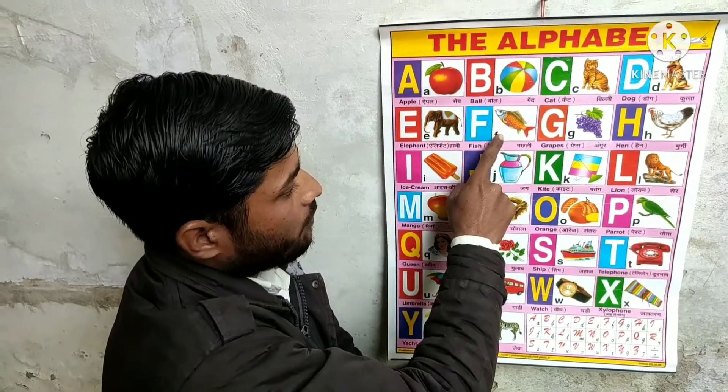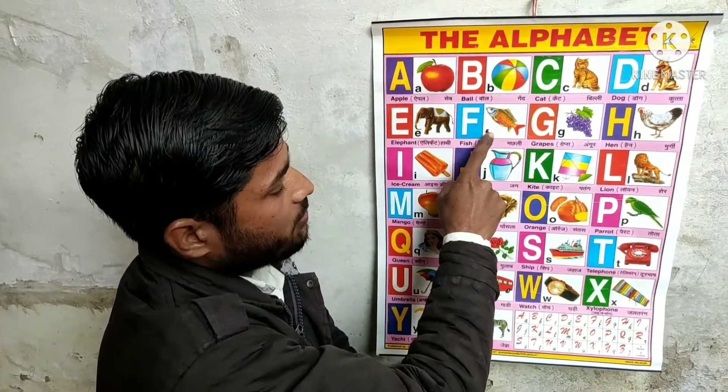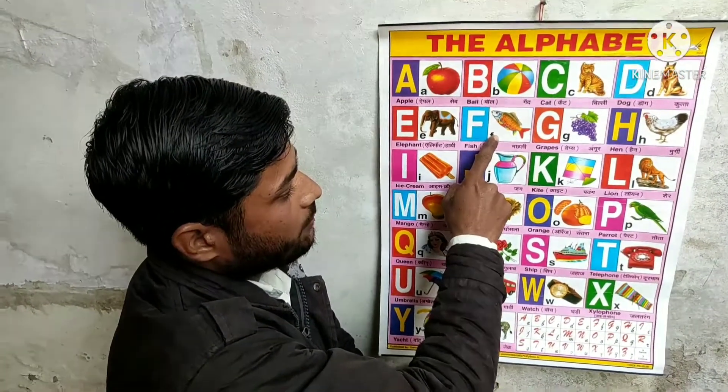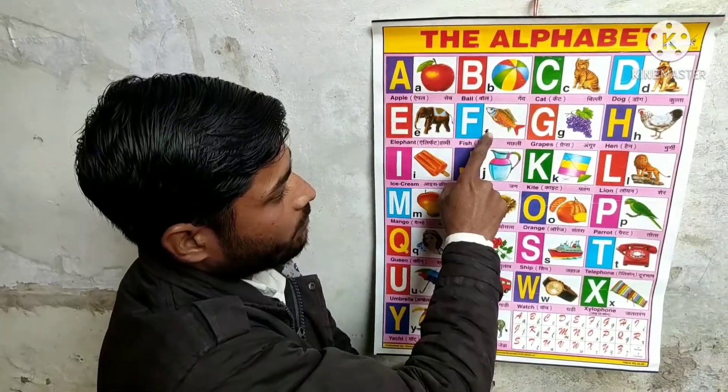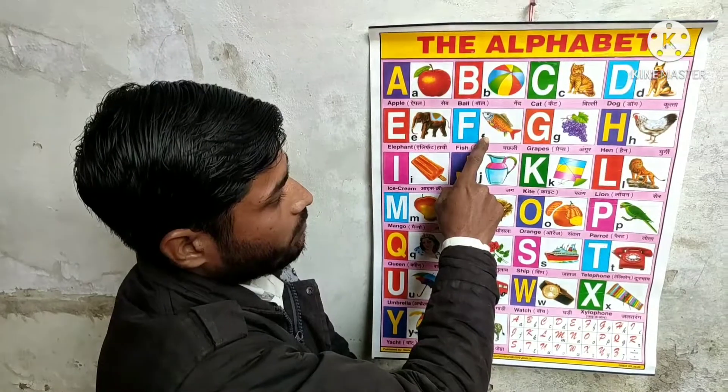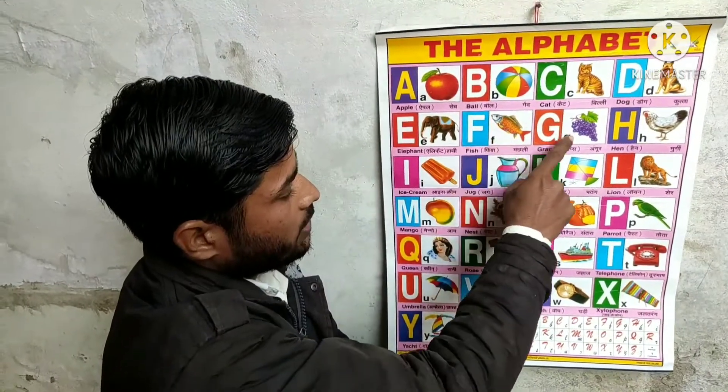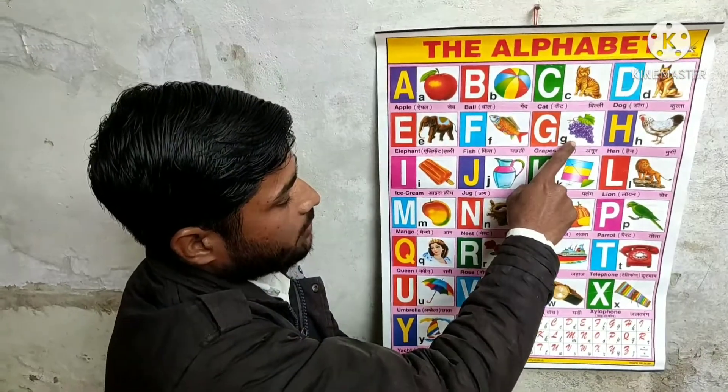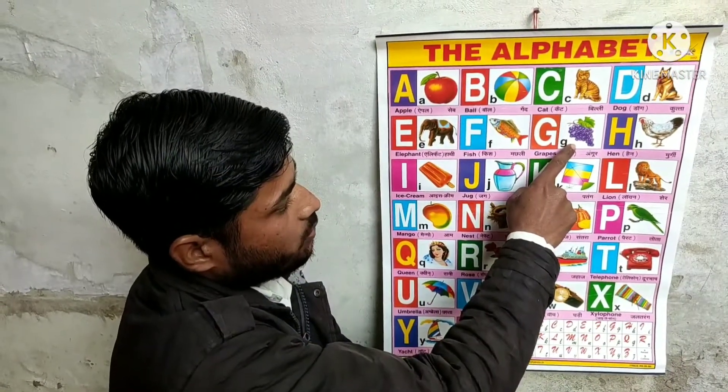F for fish, fish means machli. G for web, web means angur.